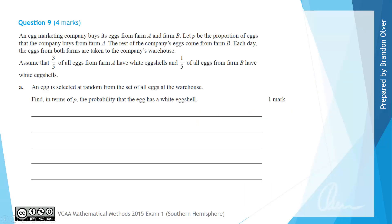For question 9, an egg marketing company buys its eggs from farm A and from farm B. Let P be the proportion of eggs that the company buys from farm A, with the rest coming from farm B, which we can write as 1 minus P. Each day the eggs from both farms are taken to the company's warehouse. We assume that three-fifths of all eggs from farm A have white egg shells and one-fifth of all eggs from farm B have white egg shells.